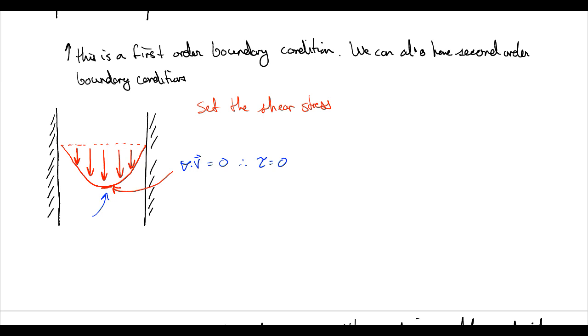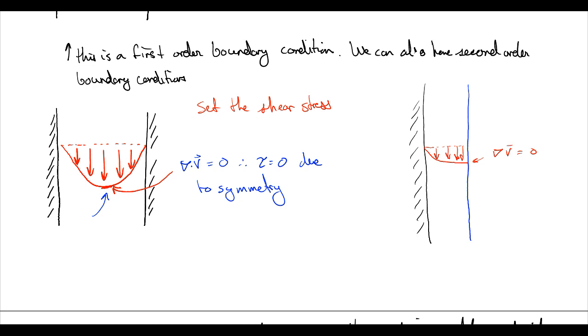The other case where a zero shear stress shows up is, and we're going to draw this now. So we're going to draw a solid surface that's motionless and then running down that surface we're going to have a liquid film that is moving down. We're going to draw the velocity profile and what you're going to find, what we're going to do here is the important part is that right here at this surface the gradient in the velocity again has to equal zero, and we call this a free surface.